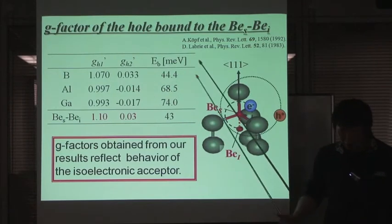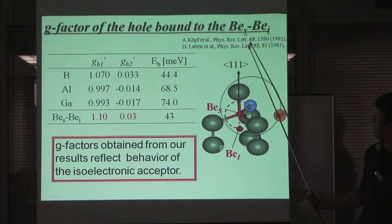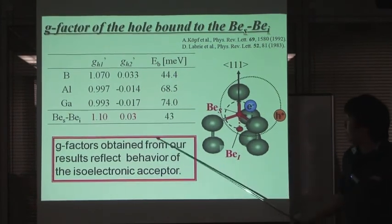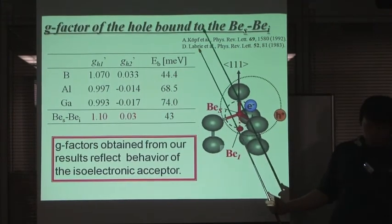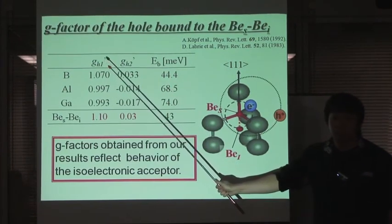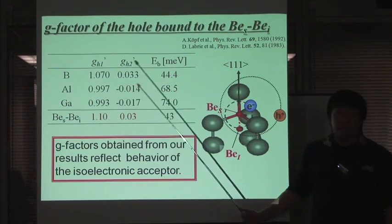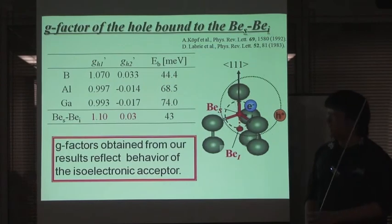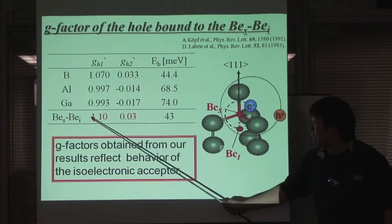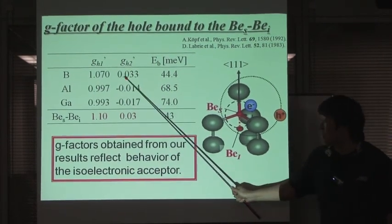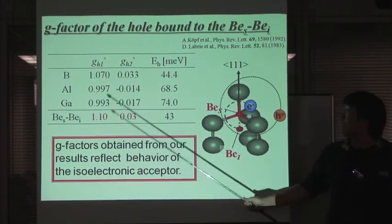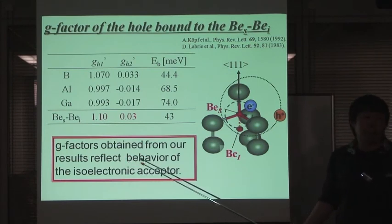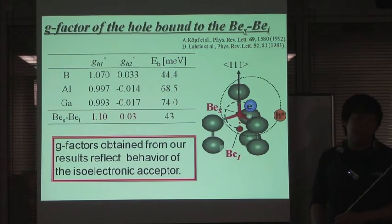The last part of this first topic concerns the g-factors of the hole bound to the barium pairs. This table shows the g-factors of the hole bound to acceptors and barium pairs. This table shows clearly that the difference in binding energy causes a change in the g-factors of the holes. Please note that the binding energy of the holes bound to a barium pair is close to that of boron. And the g-factors of the holes bound to the barium pairs are very similar to those of boron. Therefore, these values from our calculation imply that the g-factors of the barium pairs reflect acceptor-like behavior, and the excitons bound to the barium pairs behave as isoelectronic acceptors.